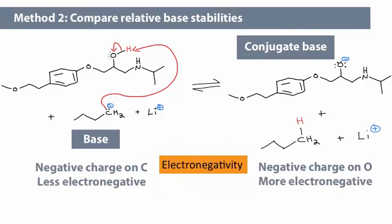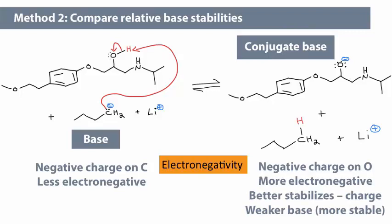Oxygen is more electronegative than carbon, meaning the oxygen can better stabilize the negative charge. This makes the oxygen atom a weaker base than the carbon atom. Because the conjugate base is weaker than the base, the acid-base equilibrium favors the products.